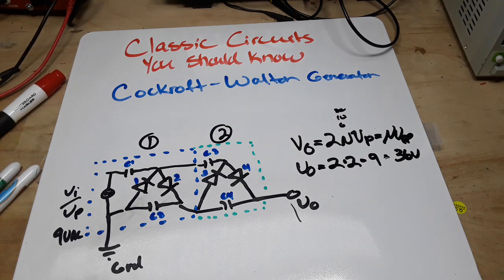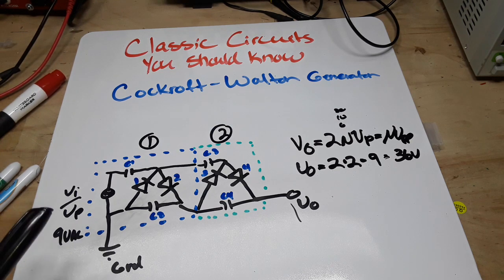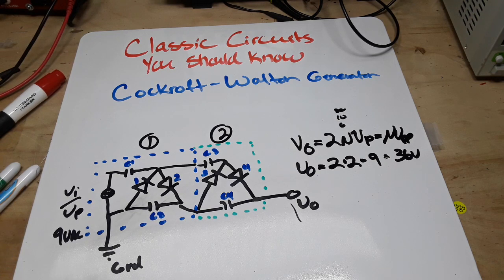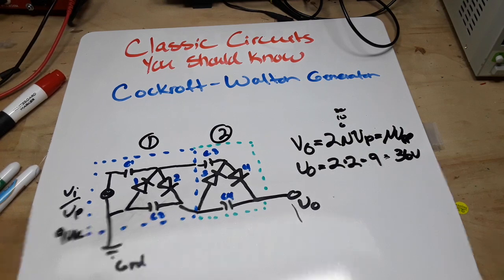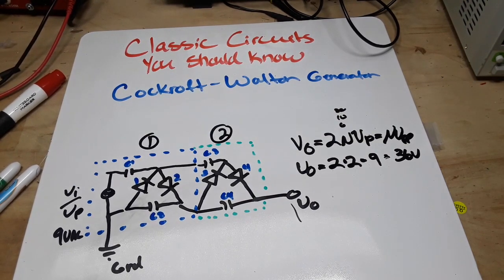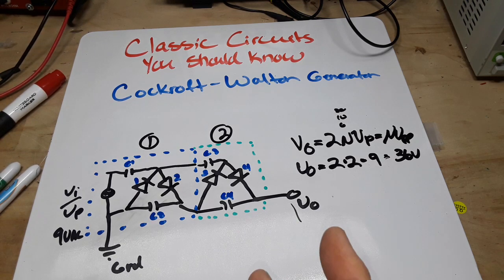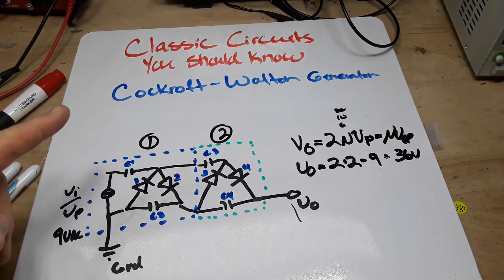Now this was invented by these two guys, I think they were Swiss, Cockroft and Walton. I don't really remember. No they were British and Irish. But this came from something called the Greinacher multiplier. I think Greinacher was the Swiss guy. Anyway, Cockroft and Walton used this to power their first particle accelerator in the 1930s and they won a Nobel Prize for it in the 1950s. So this is definitely a circuit you should know.